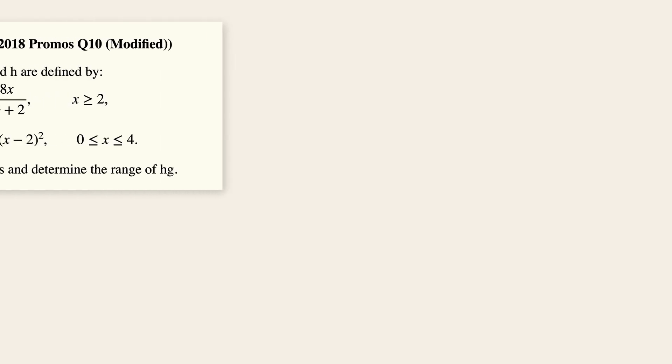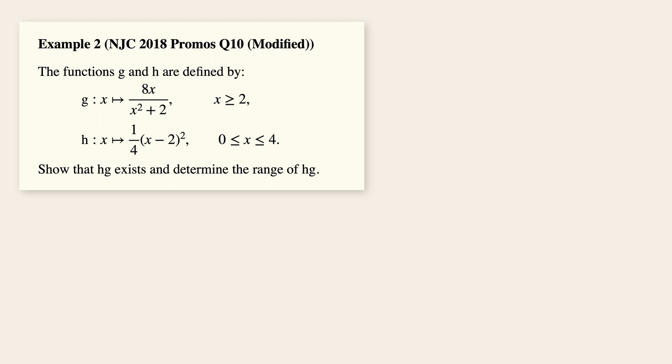All right, moving on to example two, again, we need to show that the function HG exists. So for a composite function to exist, the range of G must be a subset of the domain of H. Now let's sketch the graph of G with the given domain to help us visualize better. So the range of G is simply from zero all the way to eight over three inclusive.